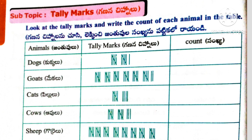Look at the tally marks and write the count of each animal in the table. Here is one table with three columns. The first column has animals, the second column has tally marks, and the third one is count. First animal: dogs. The tally marks show 11, so we write 11. Next animal: goats. Total goats are 5 plus 5 plus 5 plus 5 plus 5 plus 5 plus 2, total 32.